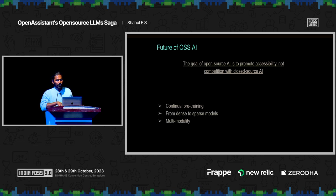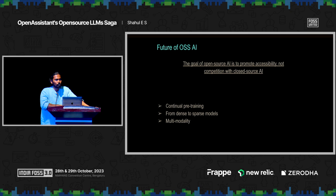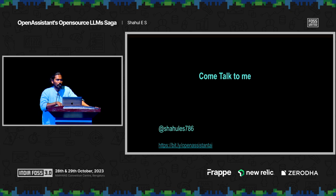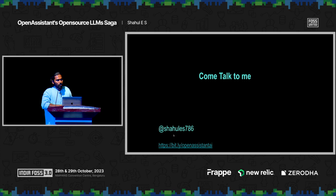Regarding the future of open source AI, the goal is not to compete with closed source AI, but to make sure this technology is accessible to everyone who wants to explore it. Some promising areas include continual pre-training, moving from sparse to dense models, and multi-modality. These are advanced topics — if anyone would like to speak with me about LLMs, come talk to me. I'm also on Twitter. Slides are available at the link provided. Thank you.